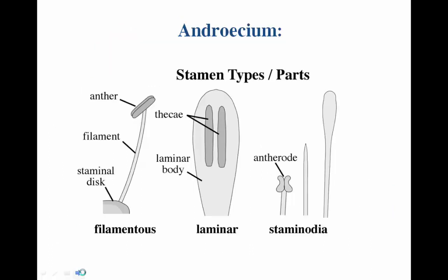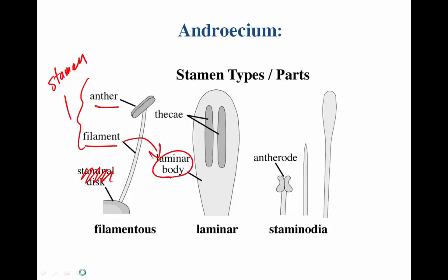In the androecium, the most important structures are the filament and the anther, which together form the stamen. There are sometimes other structures: the filament can take on petal-like shapes, and sometimes the whole anther can be sterilized. These sterile structures — staminodes — sometimes occur in the place of a stamen, but don't worry about them too much.